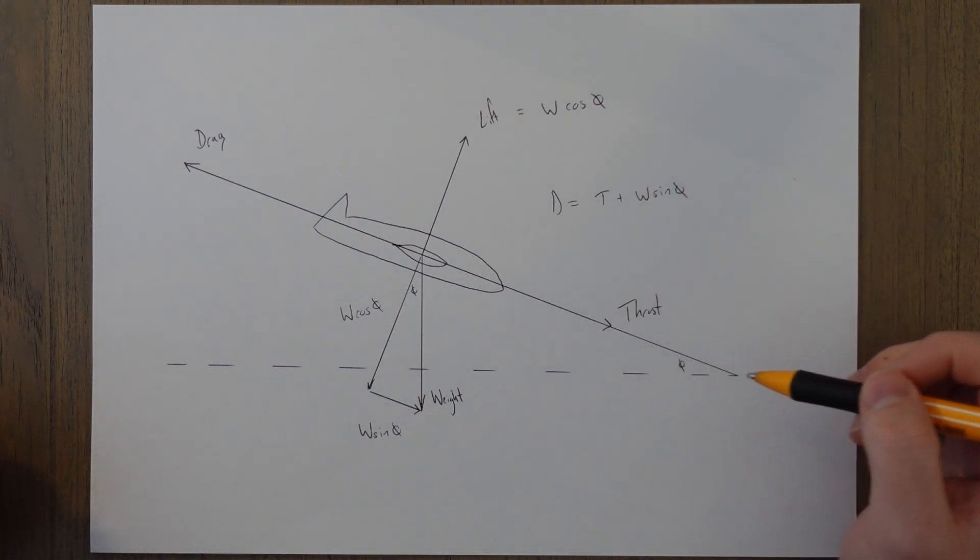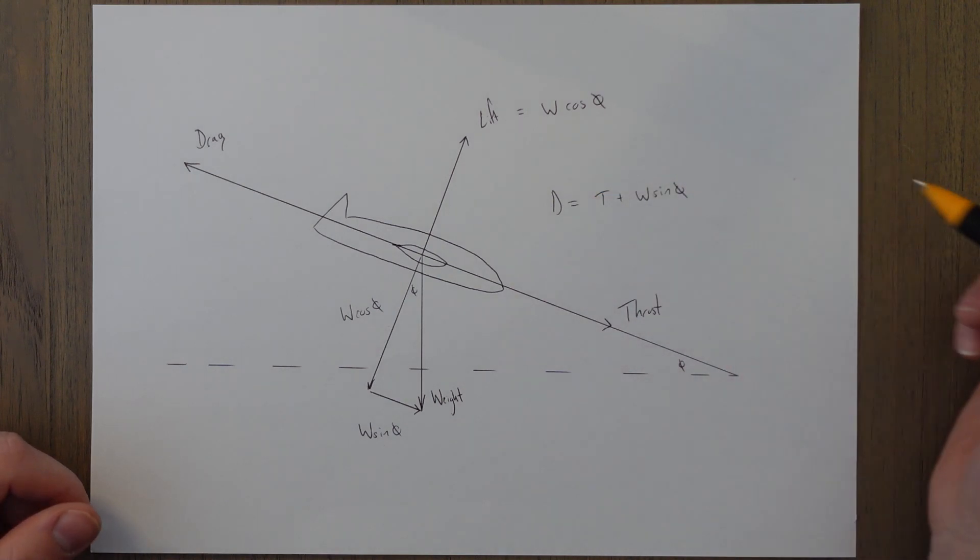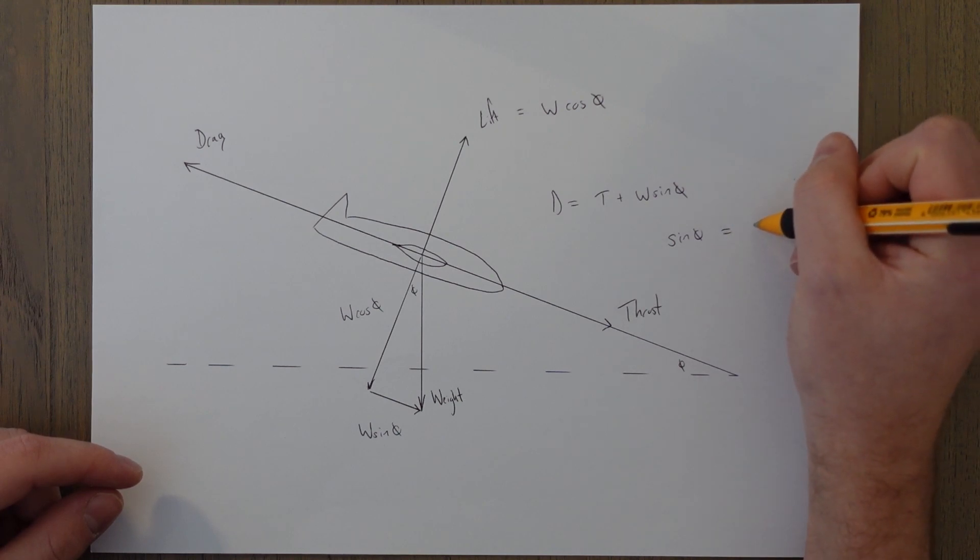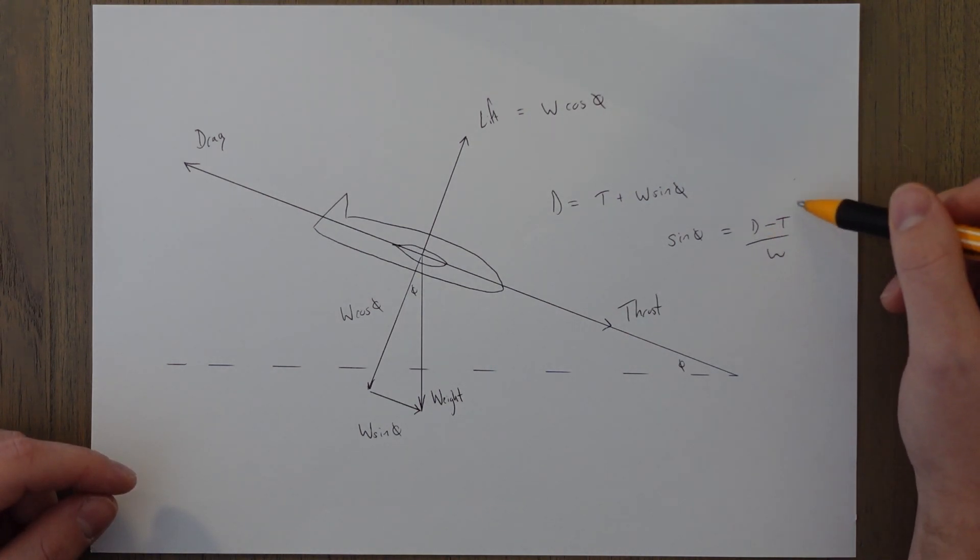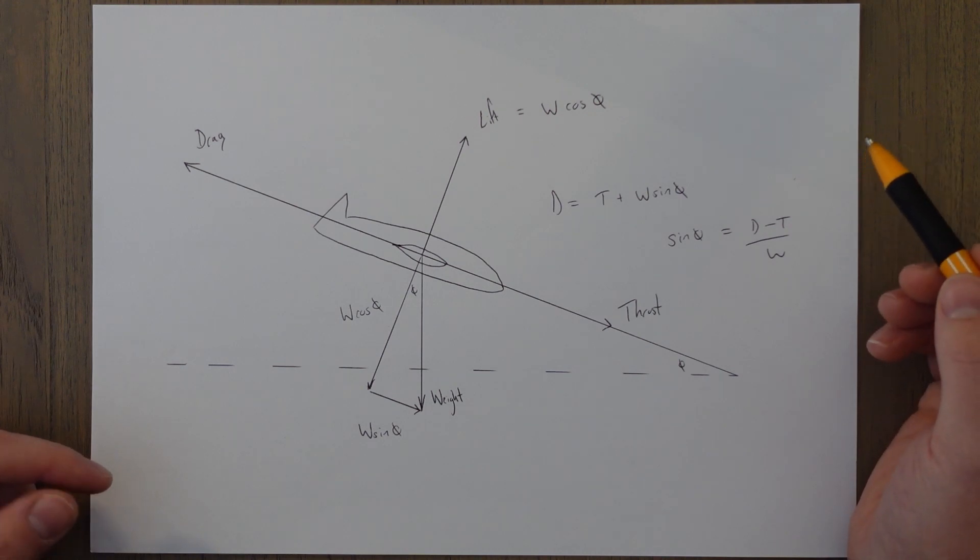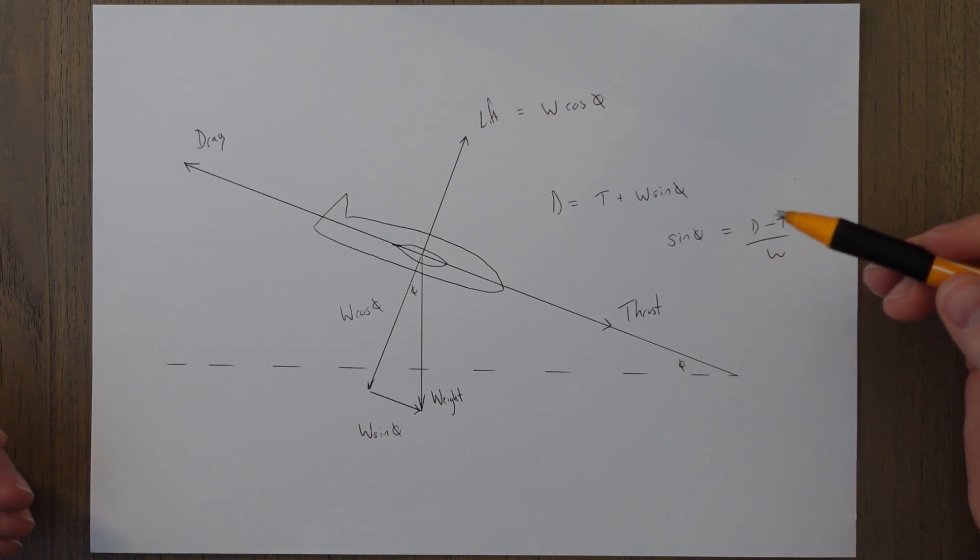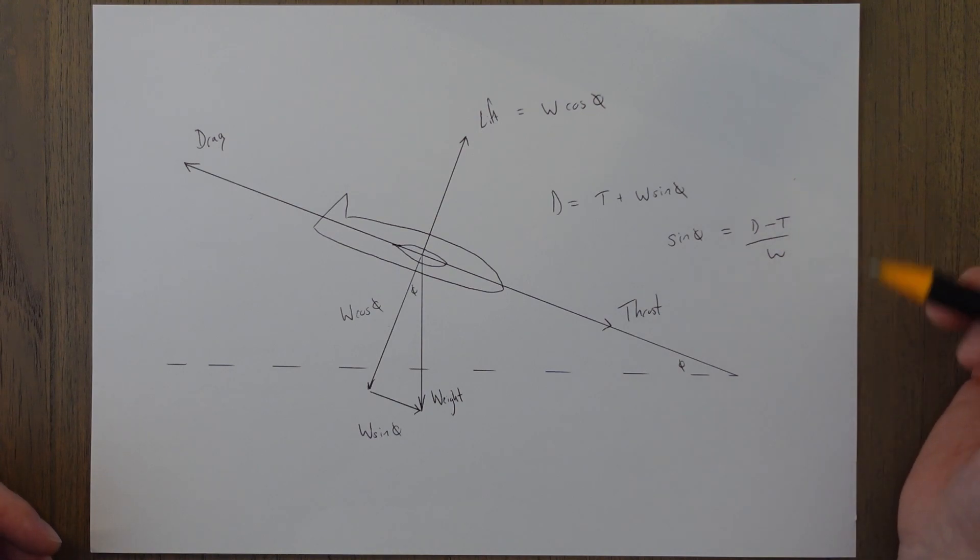We can figure out how steep our angle is of the descent by rearranging one of these equations. We rearrange this one and we get a formula for sine theta which equals drag minus thrust over weight. The smaller the value for the right hand side of the equation, the smaller the value for sine theta and of course theta as well. So the angle would be very shallow if we had a low value over here, or if we had a really high value over here we'd get a steep descent and we'd need lots of excess drag over thrust for this to happen.